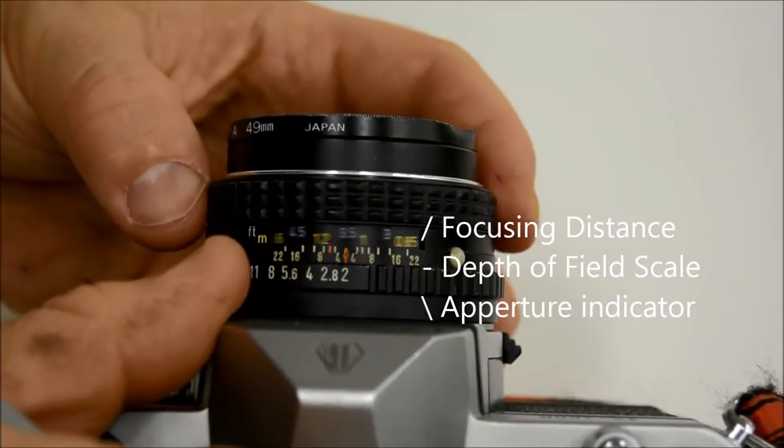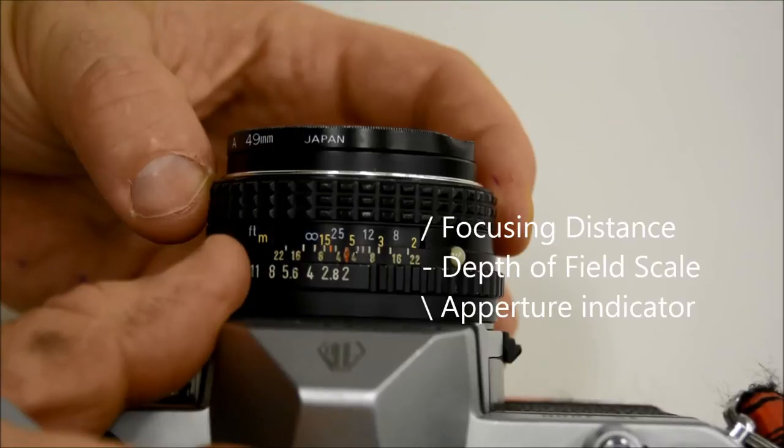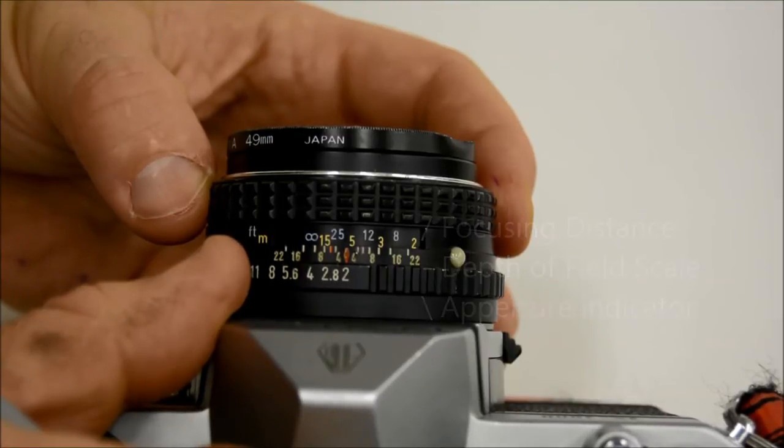If you focus on something further away, let's say at 5-6 meters away, then your background would be in focus, but your foreground would be blurry, much like this.